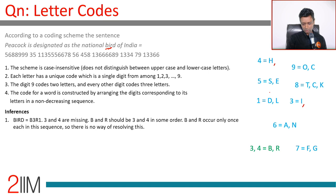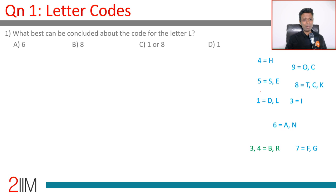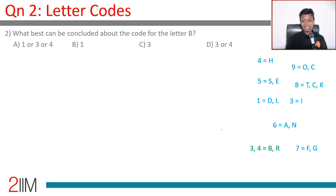Now let's answer the questions. What can be concluded about the code for L? L is one — done. What can be concluded for letter B? B is either three or four — done.